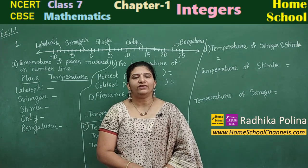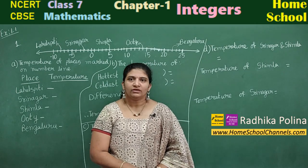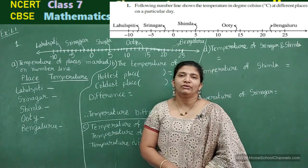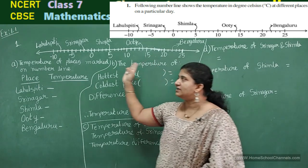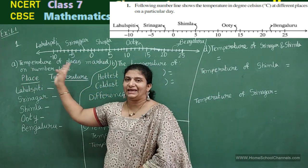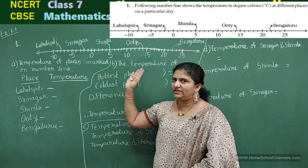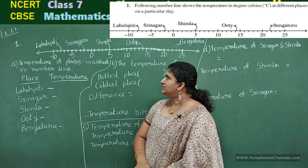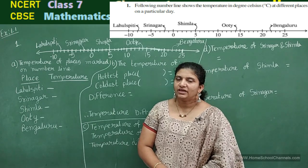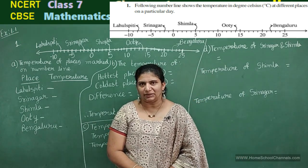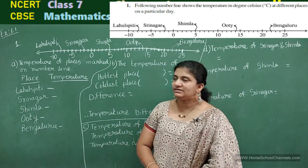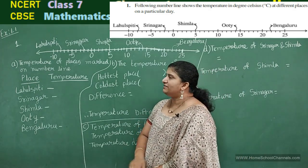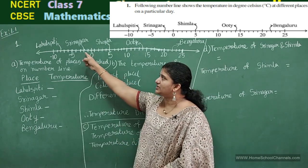In our previous classes I gave some introduction to integers. Now we are going to start Exercise 1.1 with the first problem. You can see on the board a number line I have drawn. On the number line, zero is the neutral number, positive integers are to the right side, and negative integers are to the left side. Some places are written on the number line indicating temperature on a particular day: Lahul Spiti, Srinagar, Shimla, Ooty, and Bengaluru.